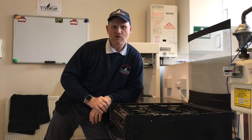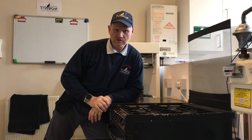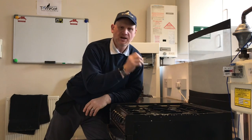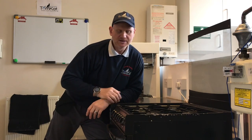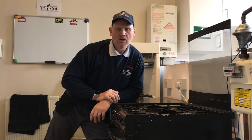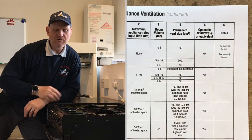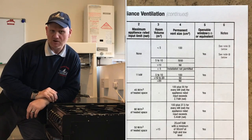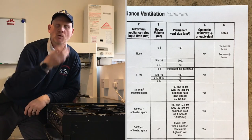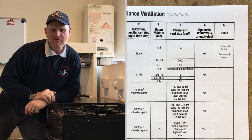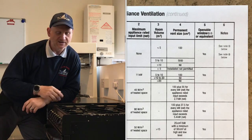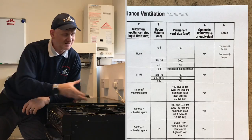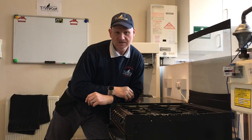The first appliances we're looking at are flueless appliances. Flueless means there is no chimney or flue coming off the appliance that terminates outside the building. That means all the products of combustion from burning gas — carbon dioxide and water vapour — come into the room. We also need to consider the size of the room, but we'll look at that later. The first flueless appliance is a cooker.